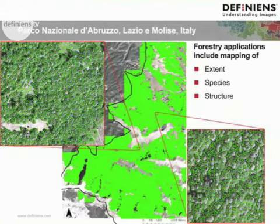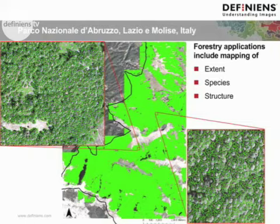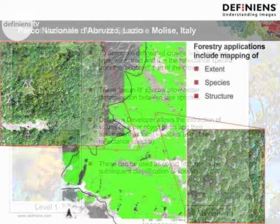What we've been doing is extending this beyond Australian forests. More recently, we've been looking at the Abrunzo National Park in Italy, where we've been able to expand this process over quite large areas. The main applications for this are mapping forest extents, species, and forest structure.